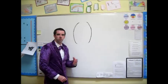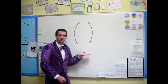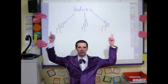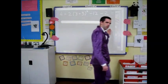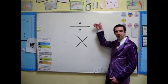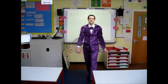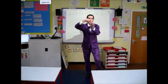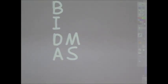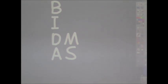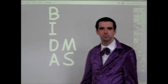You should solve all the brackets first, next indices, then work left to right when it comes to divide and multiply, then the same for add and subtract. It's BIDMAS, it's BIDMAS, it's BIDMAS — we call it BIDMAS.